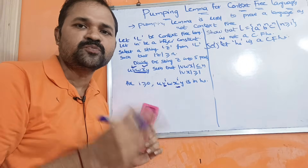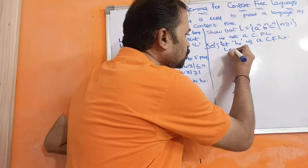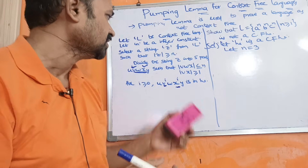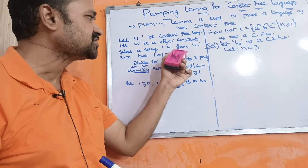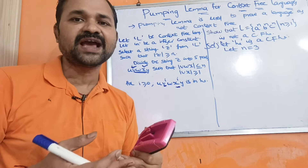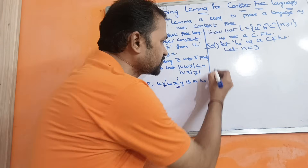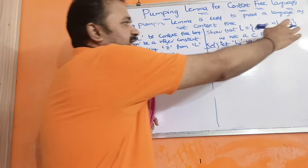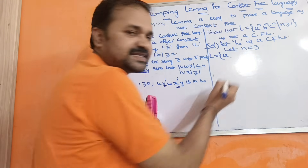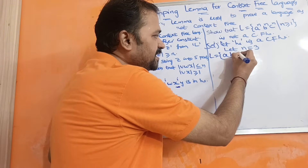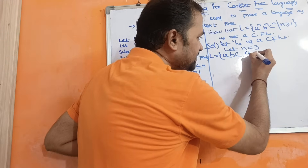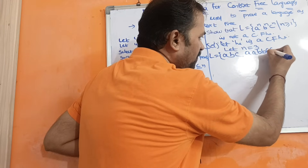Next we assume an integer value — let n = 3. We need to select a string z from the language L such that |z| ≥ n. The language includes strings like abc (n=1), aabbcc (n=2), aaabbbccc (n=3), and so on. Since we are assuming n = 3, we select z = aaabbbccc.